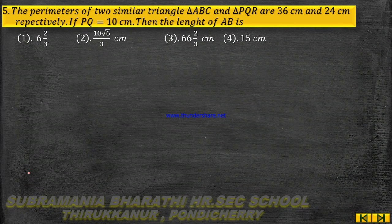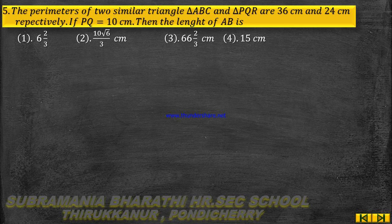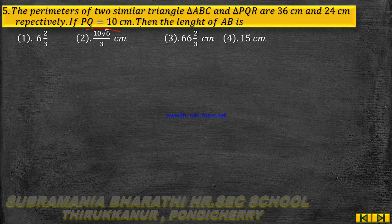Hi students. Chapter 4, 1-mark questions. Question number 4.5, question 5: The perimeters of 2 similar triangles, triangle ABC and triangle PQR, are 30 cm and 24 cm respectively. If PQ equals 10 cm, then what is the length of AB?